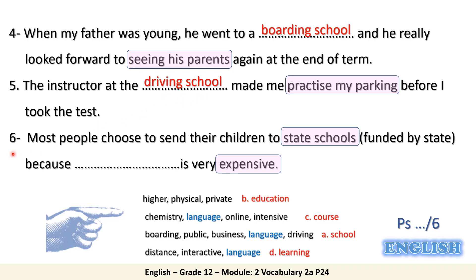Number six: most people choose to send their children to state school. State schools are funded by the state, so they are free of charge, while private education is very expensive. You can use your dictionary to check the meaning of the other collocations, put them in your word list, and write sentences of your own in order to enrich your vocabulary.